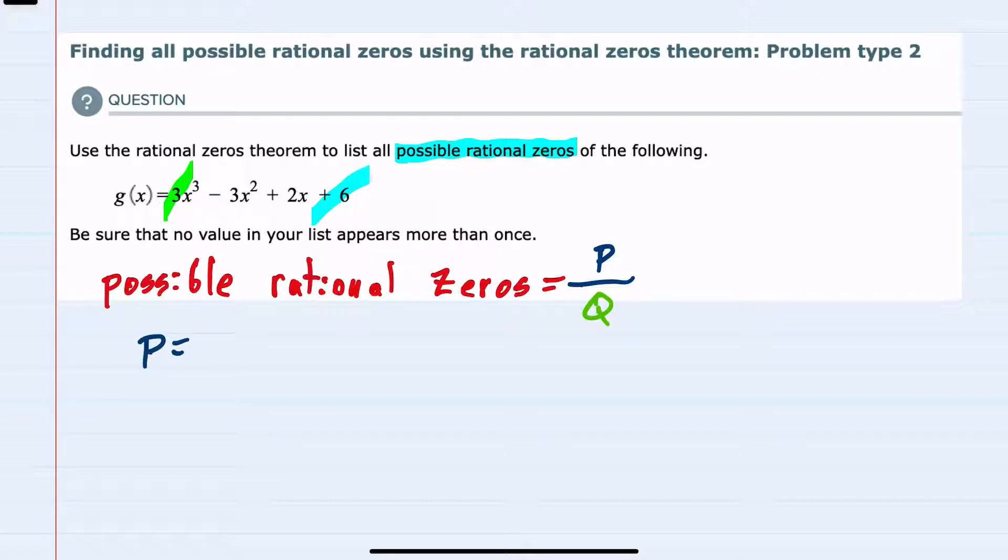So here p would be all the possible factors of six. The factors of six are six and one, two and three. So just listing them in order: plus or minus 1, plus or minus 2, plus or minus 3, and plus or minus 6.